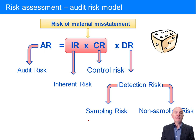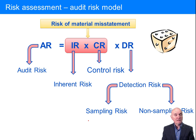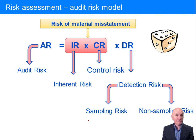How could there be a material misstatement in these financial statements? Essentially two things have to happen. First of all, an error has to be made. Then secondly, nothing or nobody within the company has picked up and corrected that error. The first type of those risks — the risk that an error occurs in the first place — is called inherent risk.